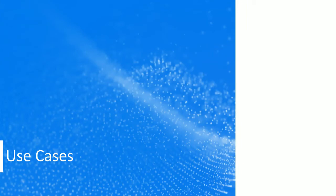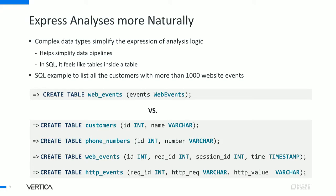Now let's look at some use cases for these complex types. The first benefit is that you'll be able to express analysis more naturally. Complex data types simplify the expression of analysis logic, thereby simplifying data pipelines. In SQL, it feels as if you have tables inside a table. For example, say you want to list all the customers with more than 1,000 website events. If you have complex types, you can simply create a table called web events with one column of type web events, which is a complex type with four fields: session, customer, and HTTP requests. If you don't have complex types, you'll have to create four tables — one for each complex type — and then establish primary key and foreign key dependencies across those tables.